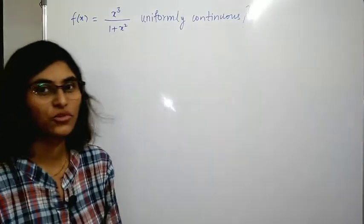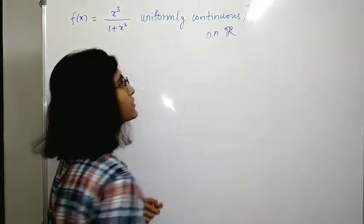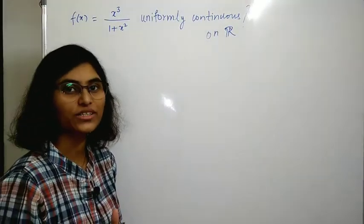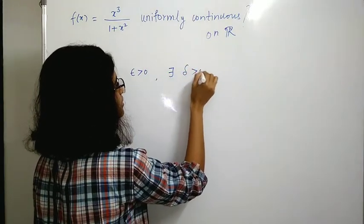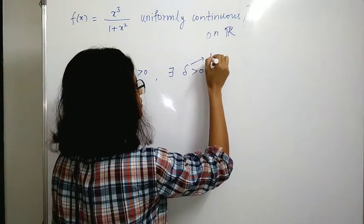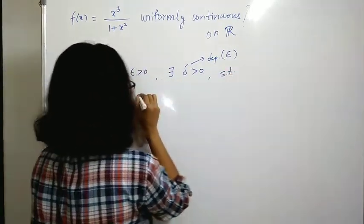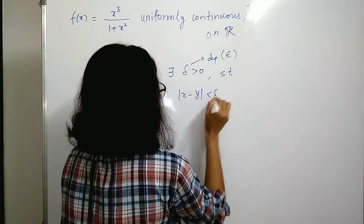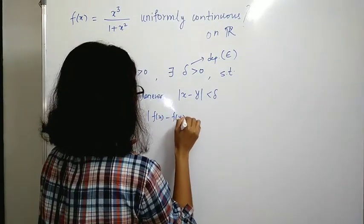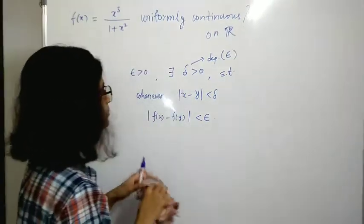Now let us solve the next question about uniform continuity. We have the function f(x) = x³ / (1 + x²) and we need to check whether this function is uniformly continuous on ℝ. The definition of uniform continuity is: given any ε > 0, there exists δ > 0 depending only on ε, such that whenever |x - y| < δ, we have |f(x) - f(y)| < ε.